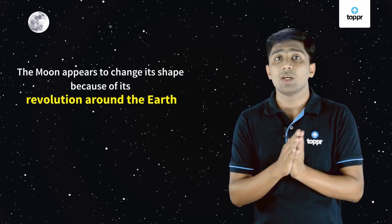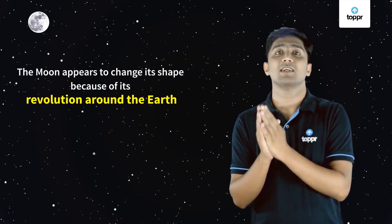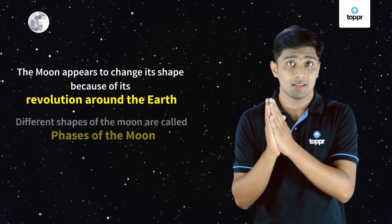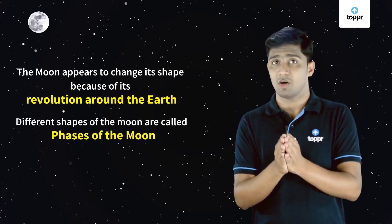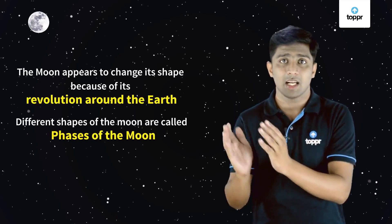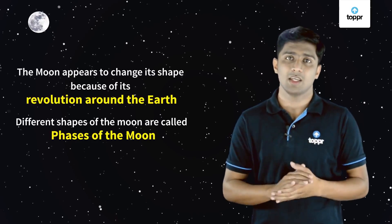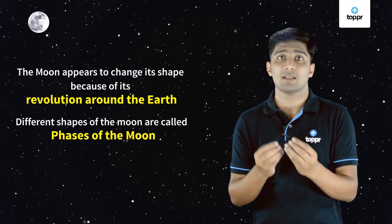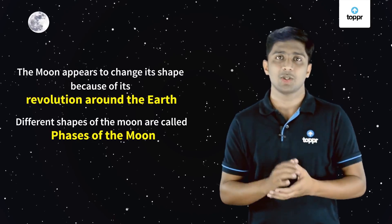Because the moon is changing its shape as it revolves around the earth. This changing of shape of the moon is called phases of moon. Phases of moon is nothing but the revolution of moon around the earth, which makes the moon appear to us like it is changing its shape. From the earth, if we observe the moon, we feel that it grows from a thin crescent to a full disk — which means a full moon. Then again it shrinks back to a thin crescent before it gets vanished off.